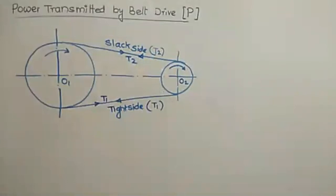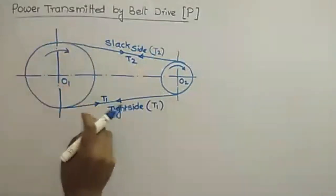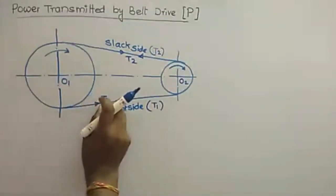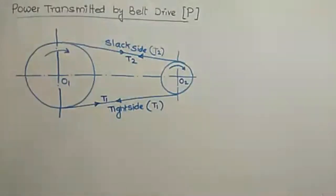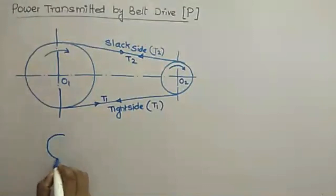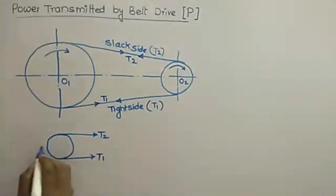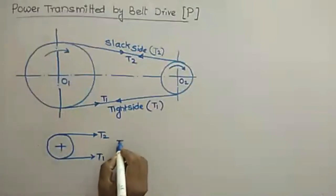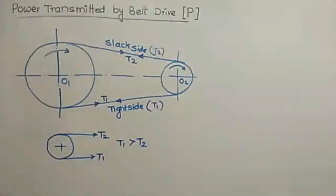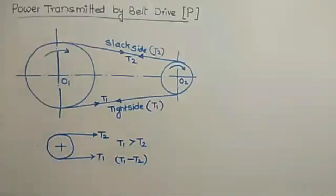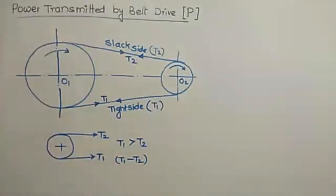The net effective force acting on the driving pulley is T1 minus T2. Since the tension on the tight side is always greater than on the slack side, T1 is greater than T2, and the net effective force is T1 minus T2. This net effective force is what causes motion and thereby causes the power transmission.